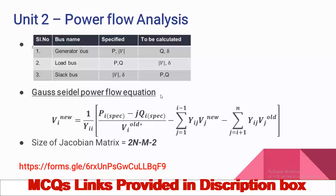The disadvantage of the Gauss-Seidel method is that accuracy is low. The second method is the Newton-Raphson method. The Jacobian matrix size is 2n minus m minus 2, where n is the number of buses and m is the number of generator buses excluding the slack bus. Generator buses are also called PV buses, voltage-controlled buses, or reactive power supplied buses. Fixed capacitor buses are load buses. The advantage of Newton-Raphson is that it is applicable for large power systems; however, calculations are complicated, computer memory required is more, but the result is accurate.